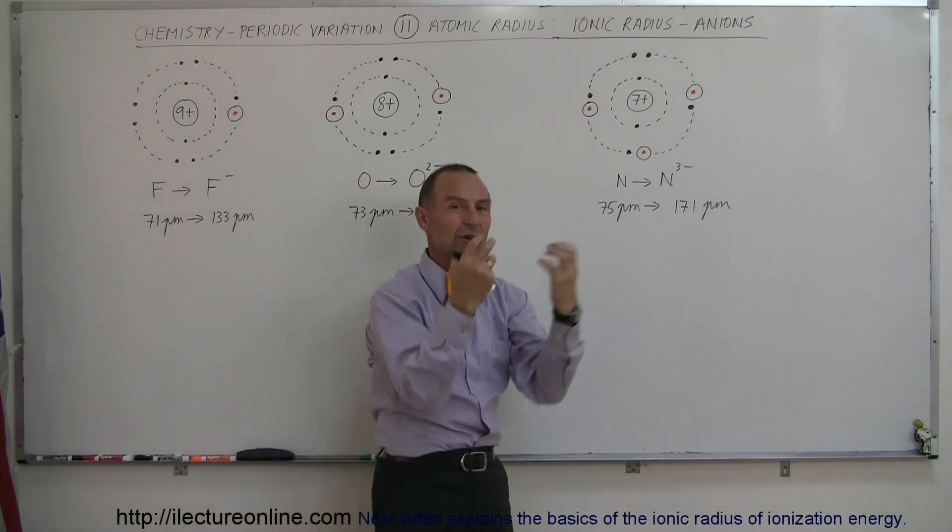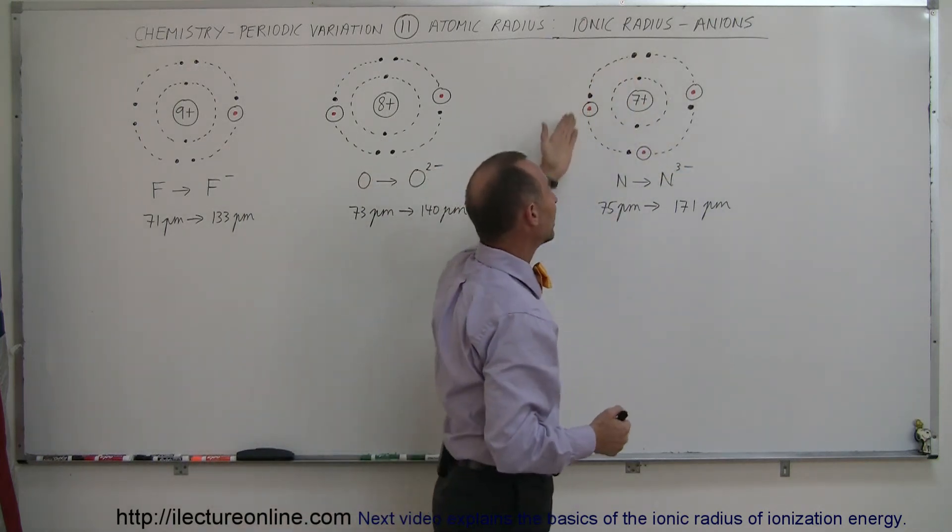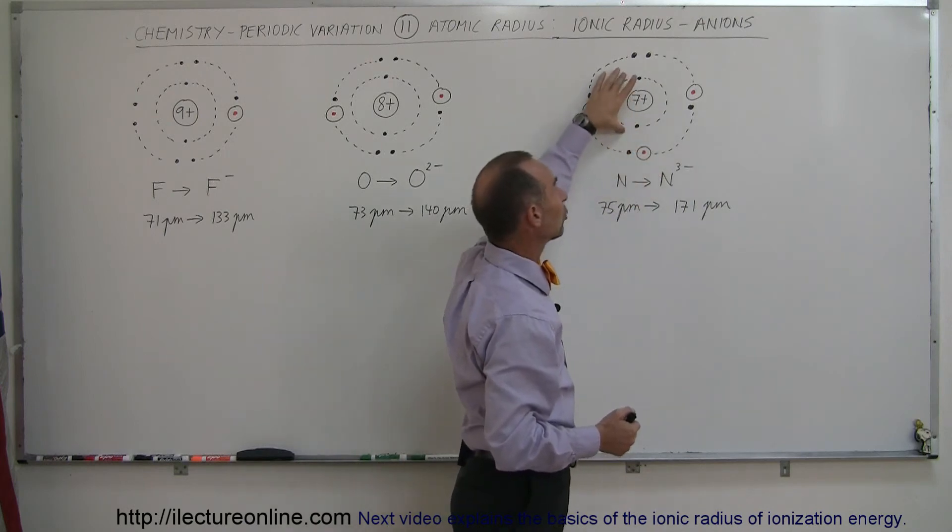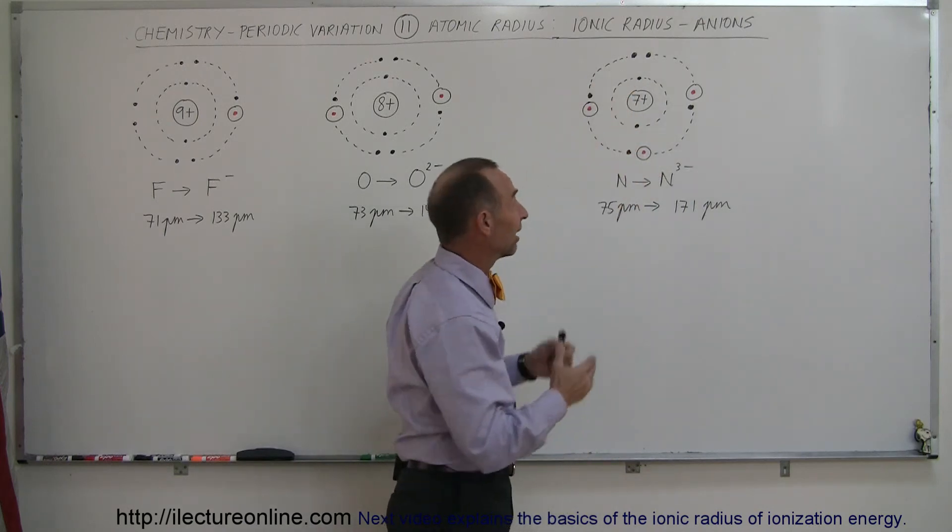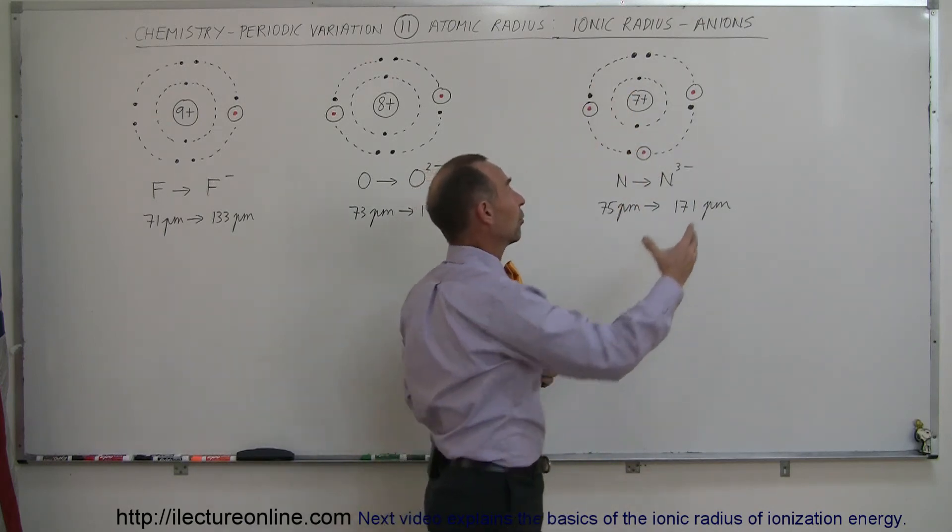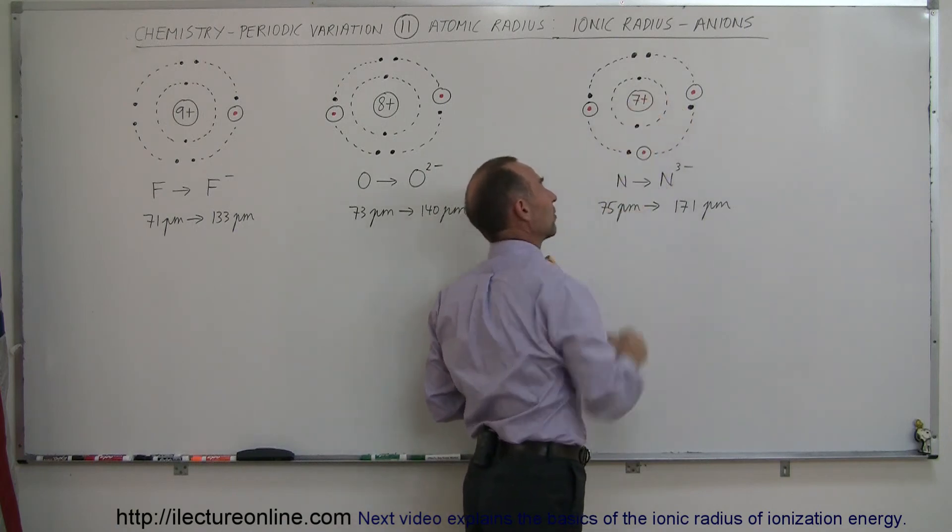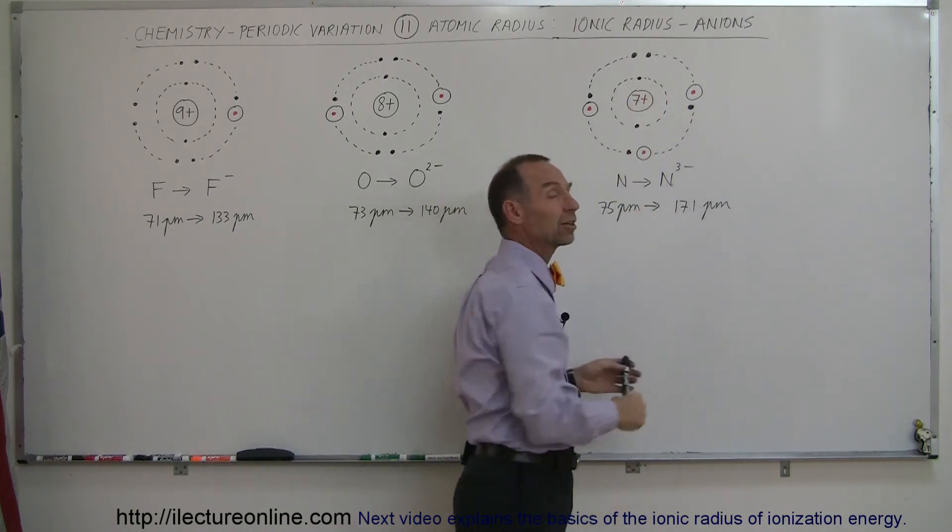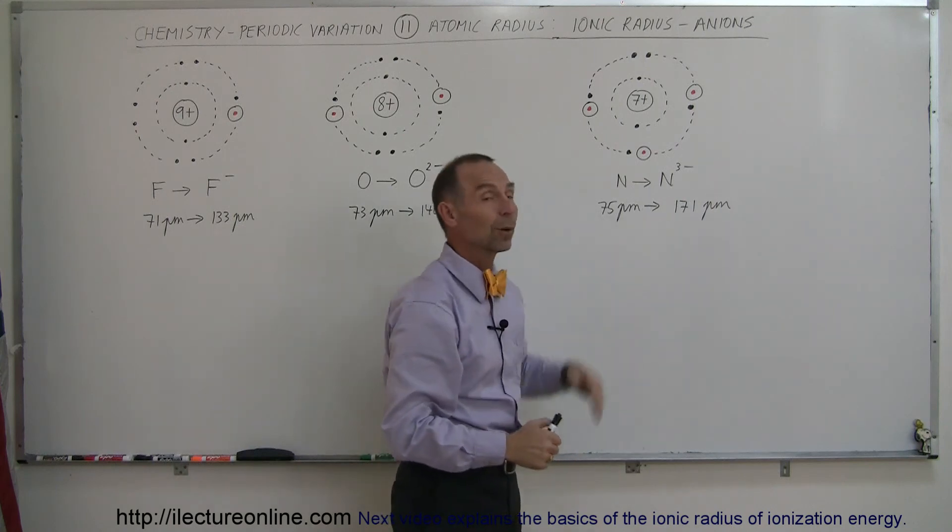So therefore there's less attractive forces, but there's still eight electrons now in the second energy level with only two electrons screening out the nucleus. That additional repulsive force with less attractive force by only having seven positive charges in the nucleus causes the ions to swell to a size of 171 picometers.